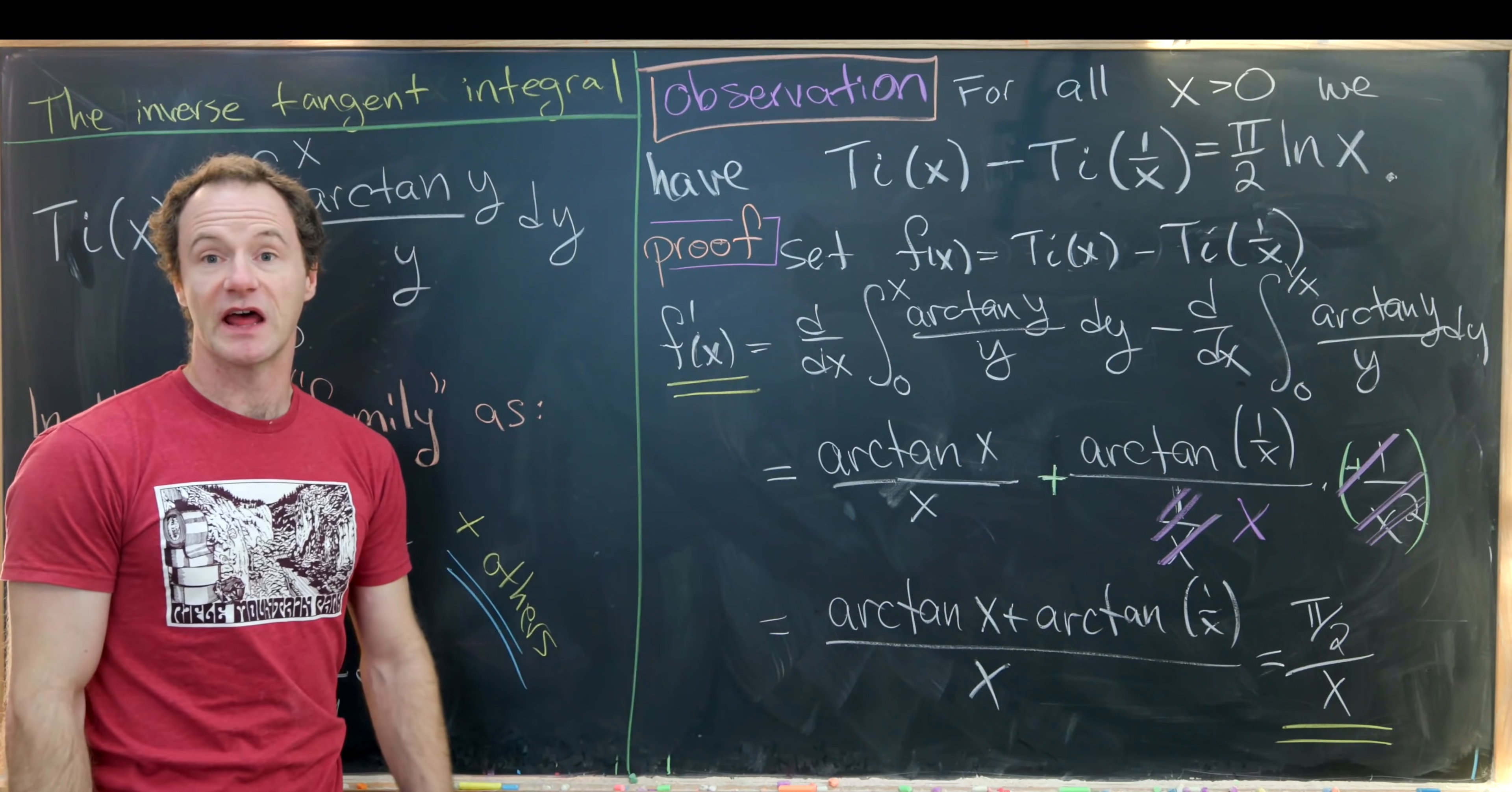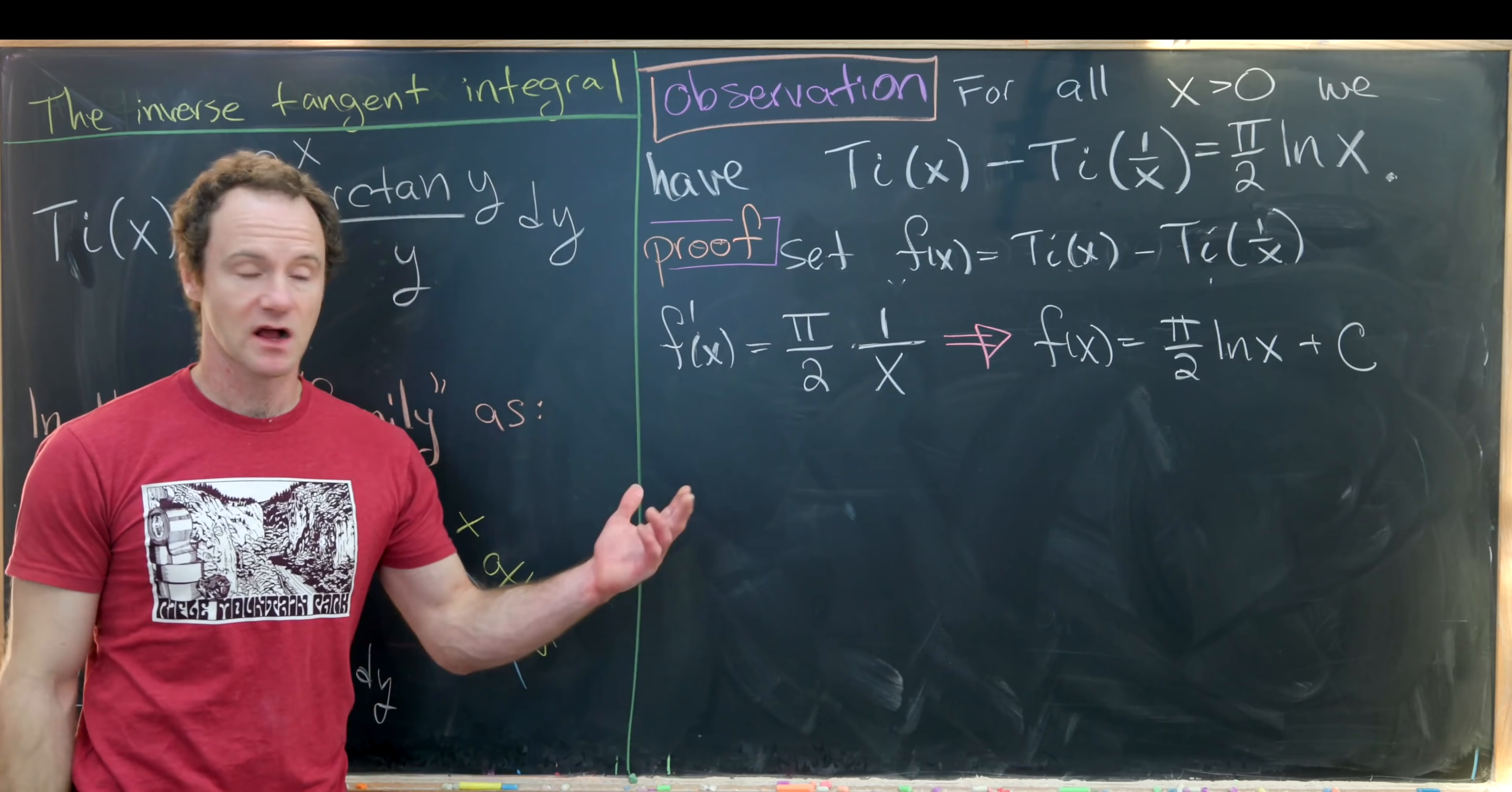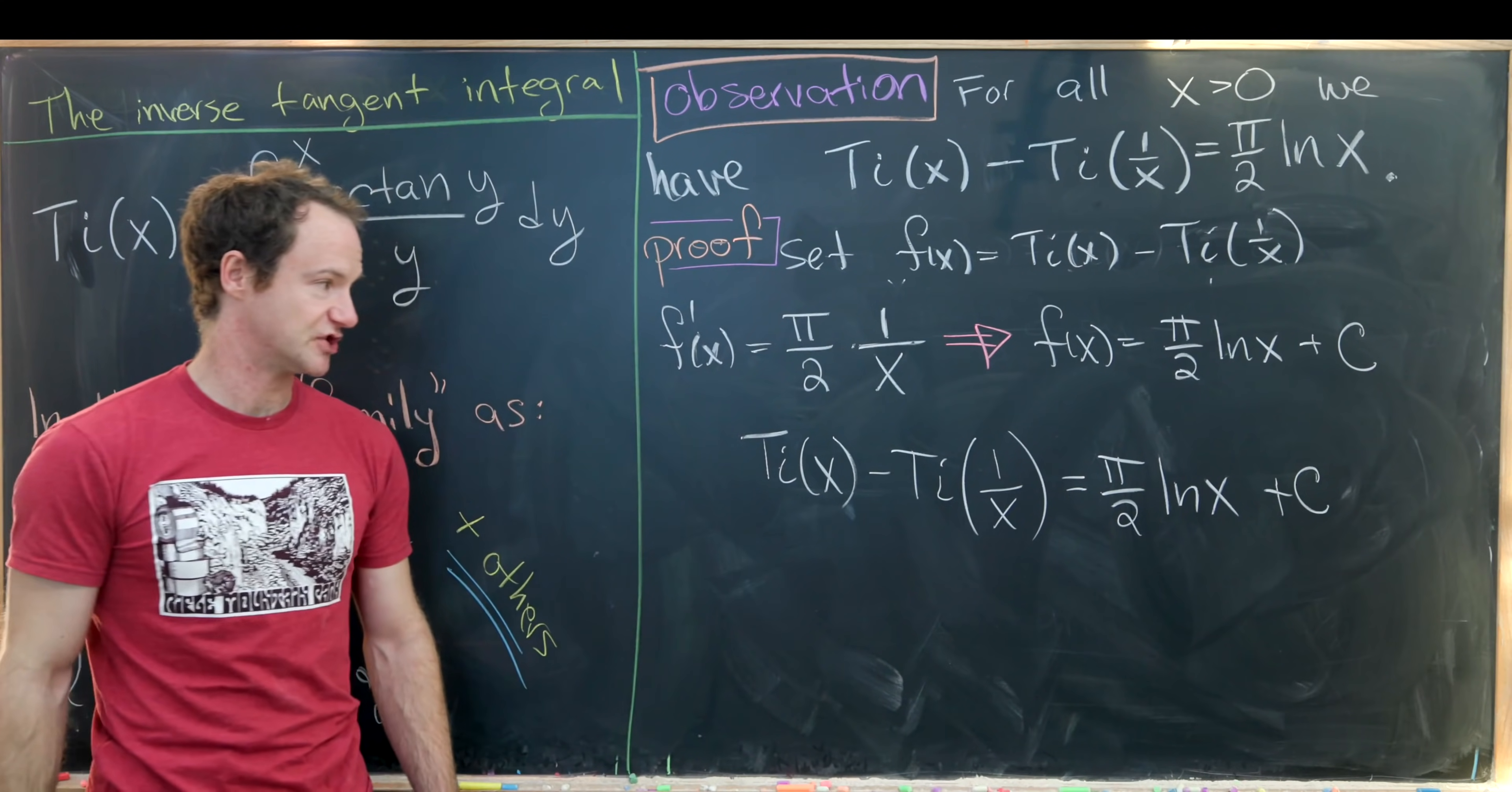Let's maybe get rid of this middle calculation and we'll take it home from there. On the last board we did some calculations that led us to the following spot: we have f prime of x is pi over 2 times 1 over x. I wrote that a little bit differently but it's exactly the same thing. But now this implies that f of x is equal to pi over 2 times the natural log of x plus some constant, and that constant is yet to be determined. So why is that? Well that's just taking the antiderivative of both sides. But now plugging that back in for what we set f of x equal to, we have this inverse tangent integral minus the inverse tangent integral evaluated at 1 over x equals pi over 2 times the natural log of x plus some constant which is yet to be determined.